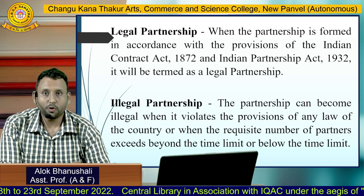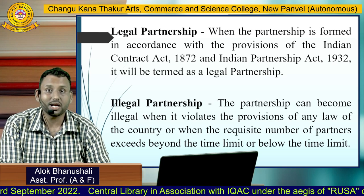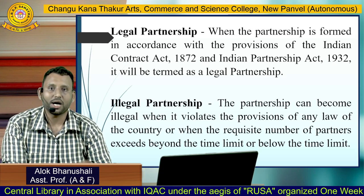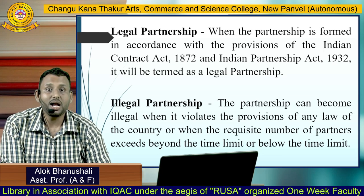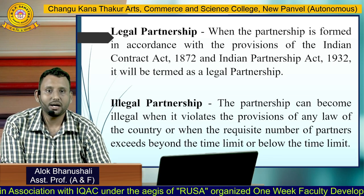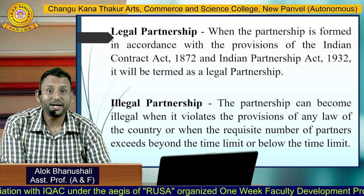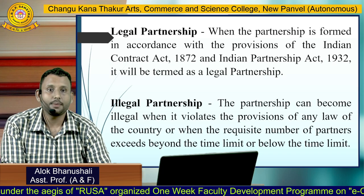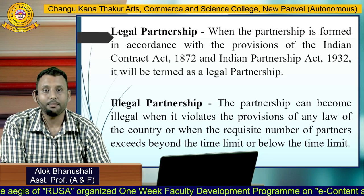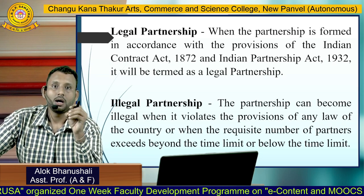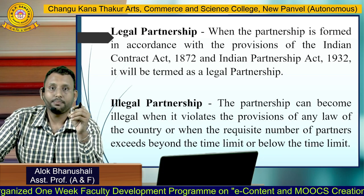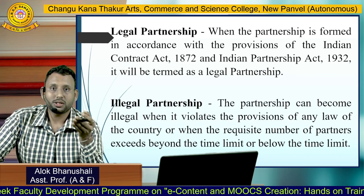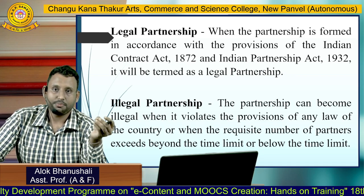Flexible partnership: partnerships that are neither for a fixed duration of time nor for any particular venture are called flexible partnerships. Legal partnership: when a partnership is formed in accordance with the provisions of the Indian Contract Act 1872 and the Indian Partnership Act 1932, it is termed a legal partnership. Illegal partnership: a partnership becomes illegal when it violates the provisions of any law of the country, or when the number of partners exceeds the legal limit — for example, if a banking partnership has more than 20 partners, it becomes illegal.